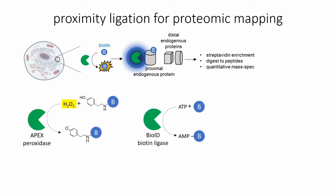Two major tools currently used for proximity labeling are APEX, a peroxidase-based method developed in our lab, and BioID, a biotin ligase-based method. Both come with trade-offs. APEX is very fast, allowing user-defined labeling windows to probe dynamic changes on the order of minutes. However, APEX requires hydrogen peroxide, which is toxic to cells. BioID, on the other hand, only requires biotin and no toxic reagents, so it's much more amenable for in vivo applications. However, BioID is slow and requires labeling times of 18 hours or longer.